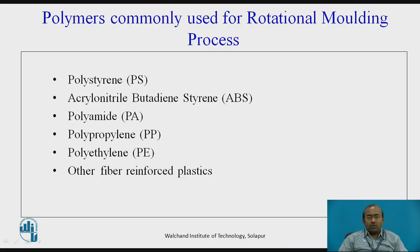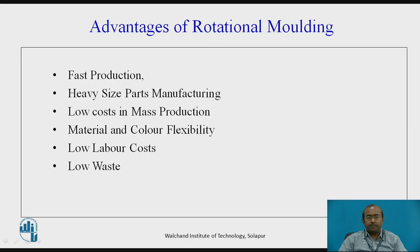The polymers commonly used for rotational molding processes are as follows: some of these are polypropylene, polyethylene, and so many more. The advantages of rotational molding include fast production, heavy size part manufacturing is easily possible, low cost in mass production, color flexibility, low labor cost, and low waste.